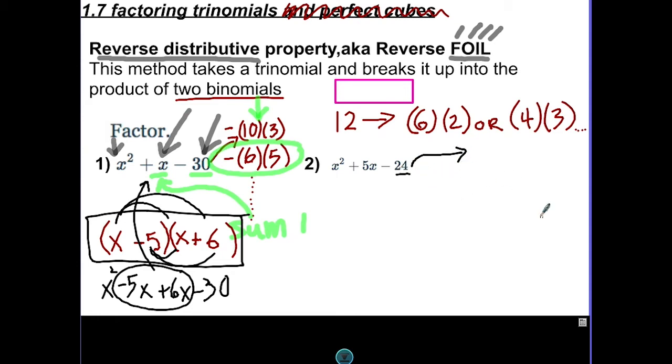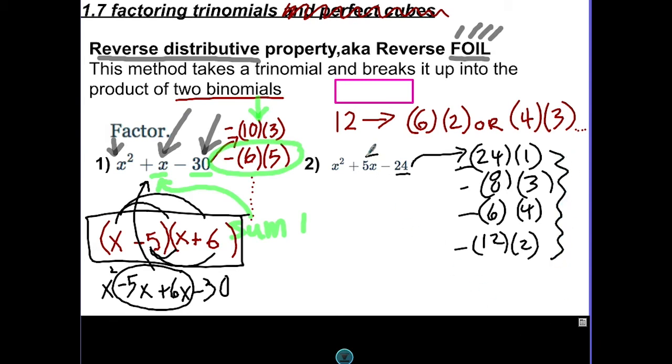You start by looking at this number. You start generating the list in your head, 24 and 1, 8 and 3, 6 and 4. You can just continue this list, 12 and 2, so on and so forth. One of these has to be negative. So I'm just going to put a negative sign here. You get to choose which one's negative. And then just take the list and find which one of these give us a sum equal to 5. It looks like 8 and 3.